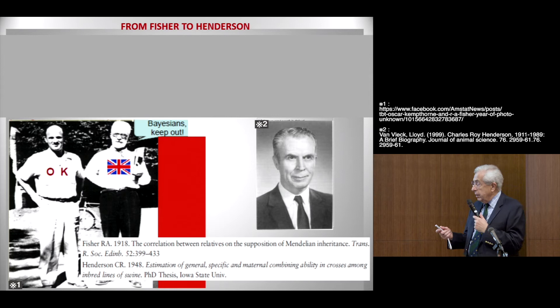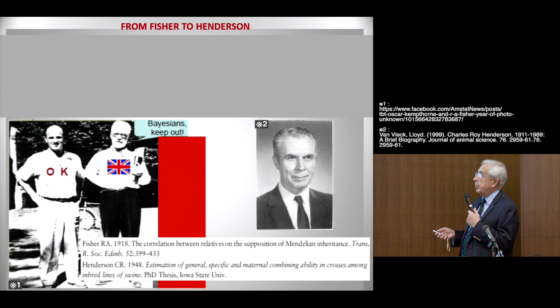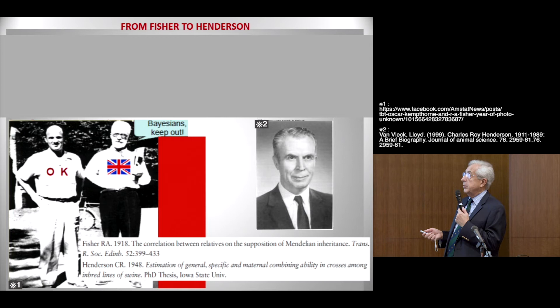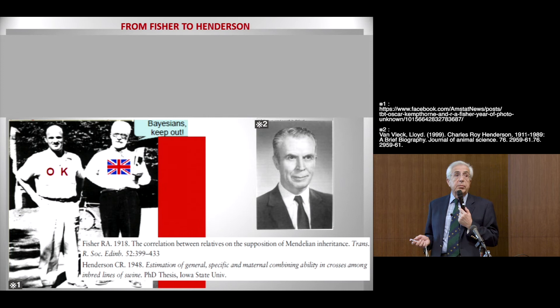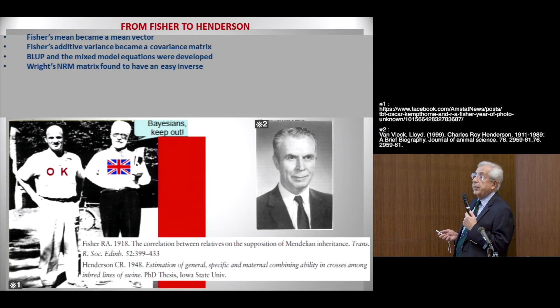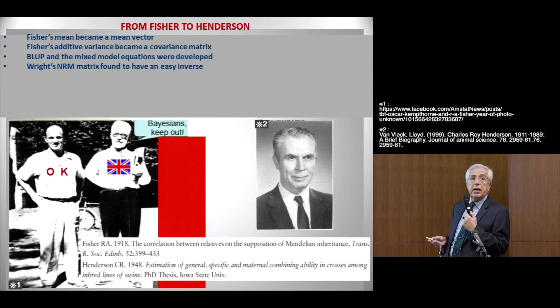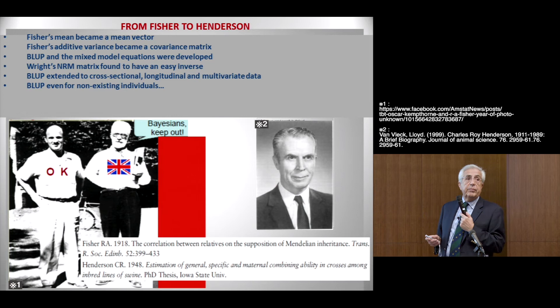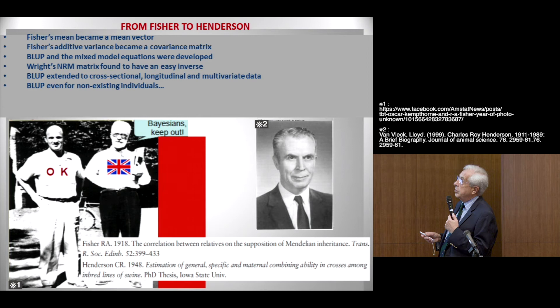On the left we have a photo of Professor Fisher when he was much older, teaching a course at Iowa State University. This is Professor Oscar Kempthorne, also from Great Britain, who did his academic career in the Statistics Department of Iowa State. I met Professor Kempthorne personally, but not Professor Fisher. On the right we have Professor Charles Henderson, who was here in Kyoto in 1984, invited by Dr. Sasaki. What Henderson did was generalize Fisher's ideas and made them vectorial, as opposed to scalar — Fisher's mean became a mean vector, and Fisher's additive variance became a covariance matrix.